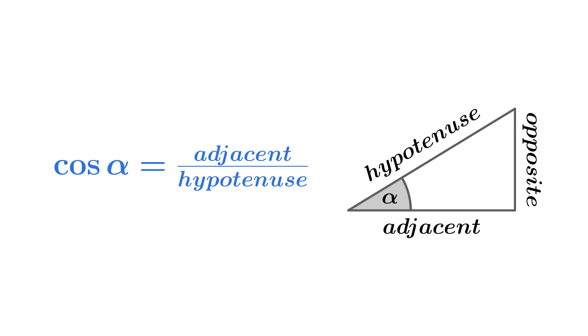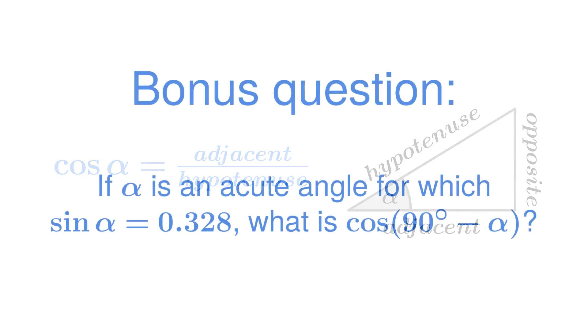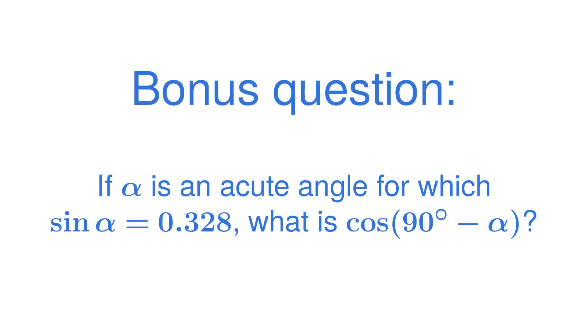With that in mind, I leave you with this question: if alpha is an acute angle for which the sine of alpha is equal to 0.328, what is the cosine of 90 degrees minus alpha? That is all for this video. If you liked it, click the like button — it helps with the YouTube algorithm. And I'll see you next time!